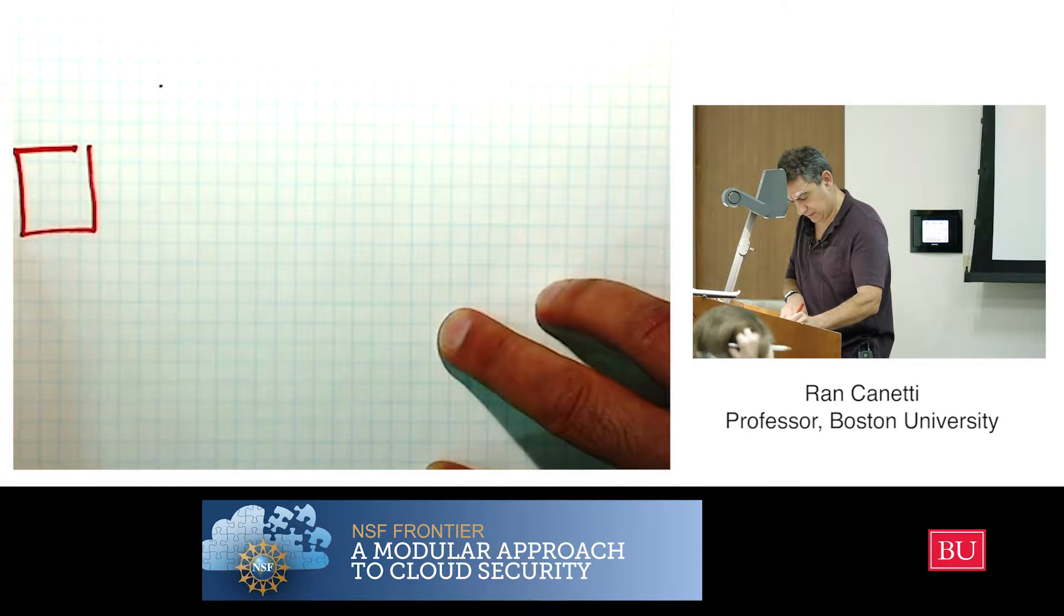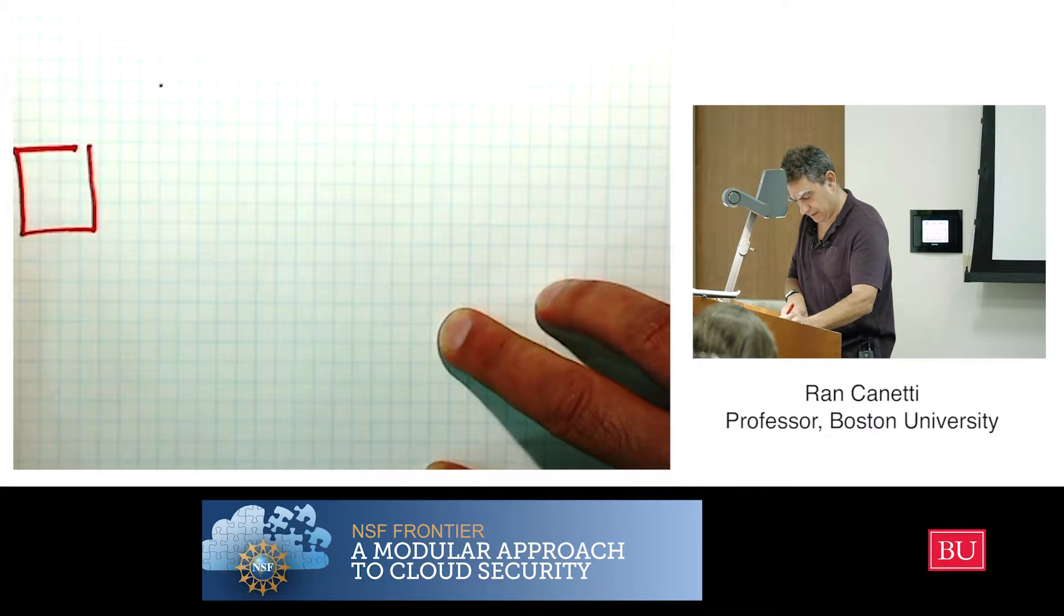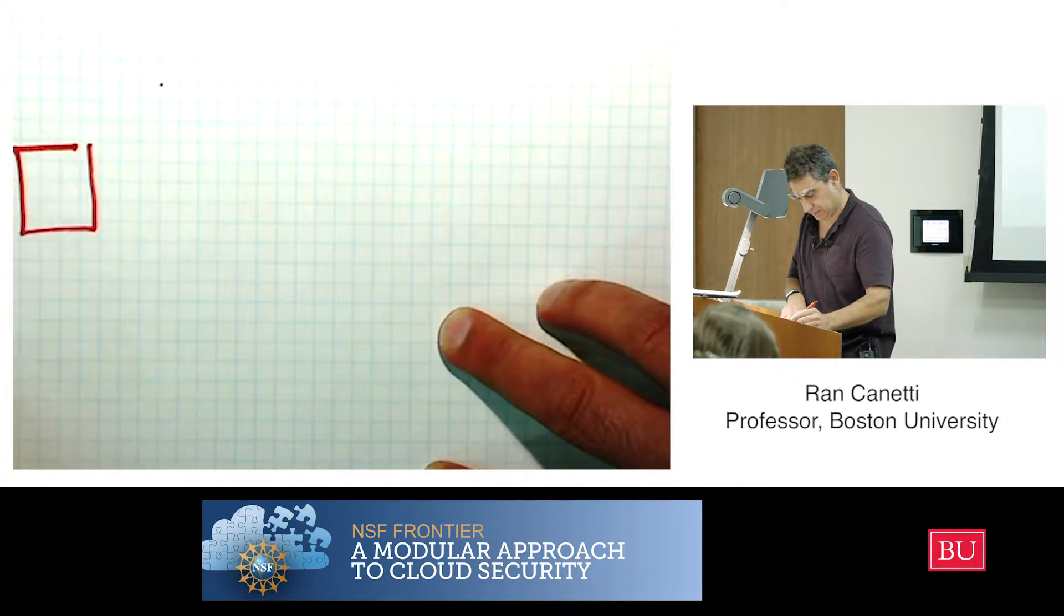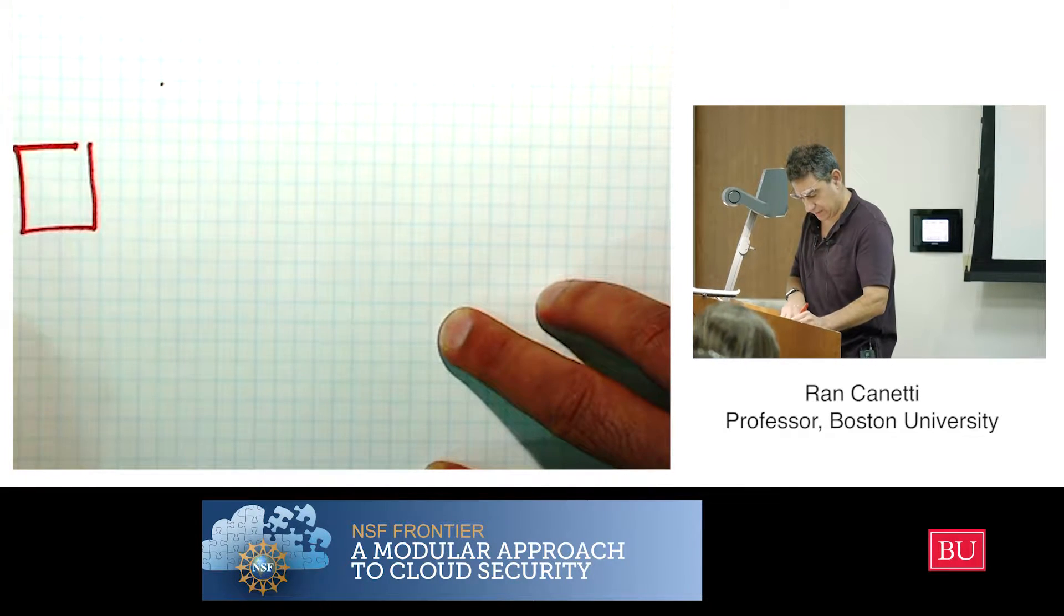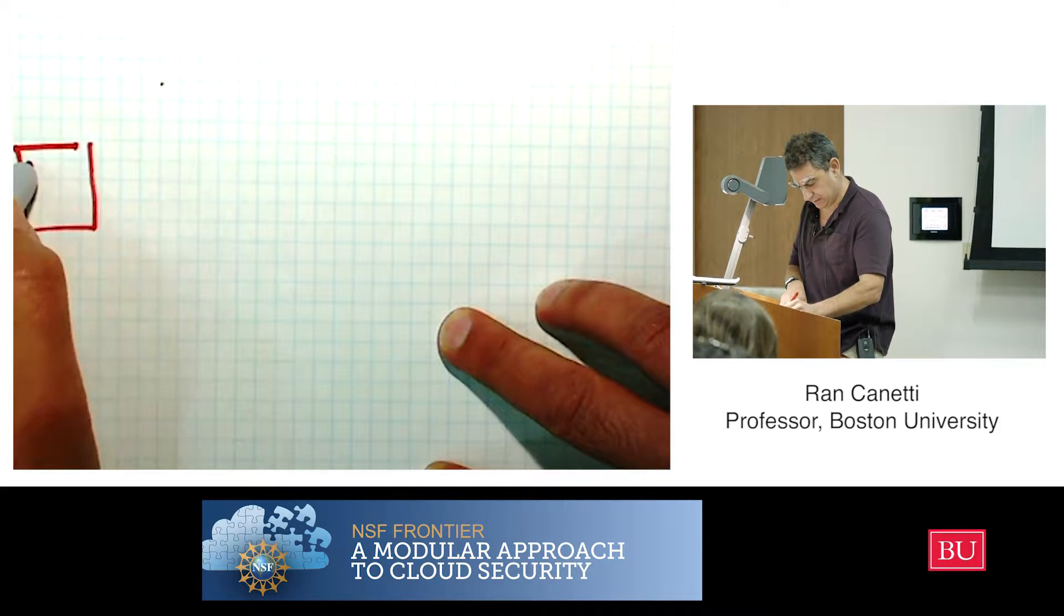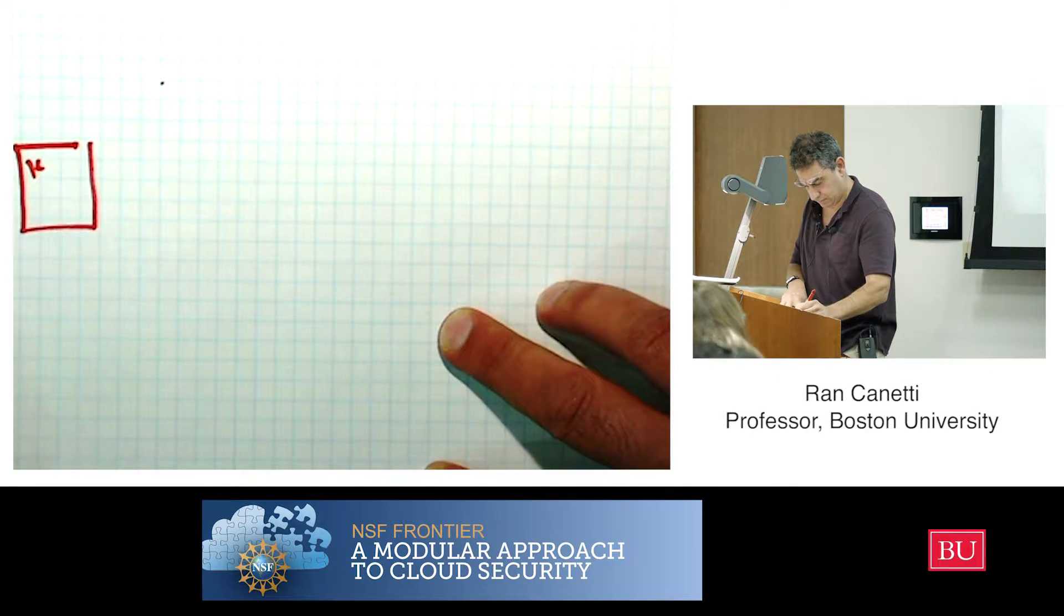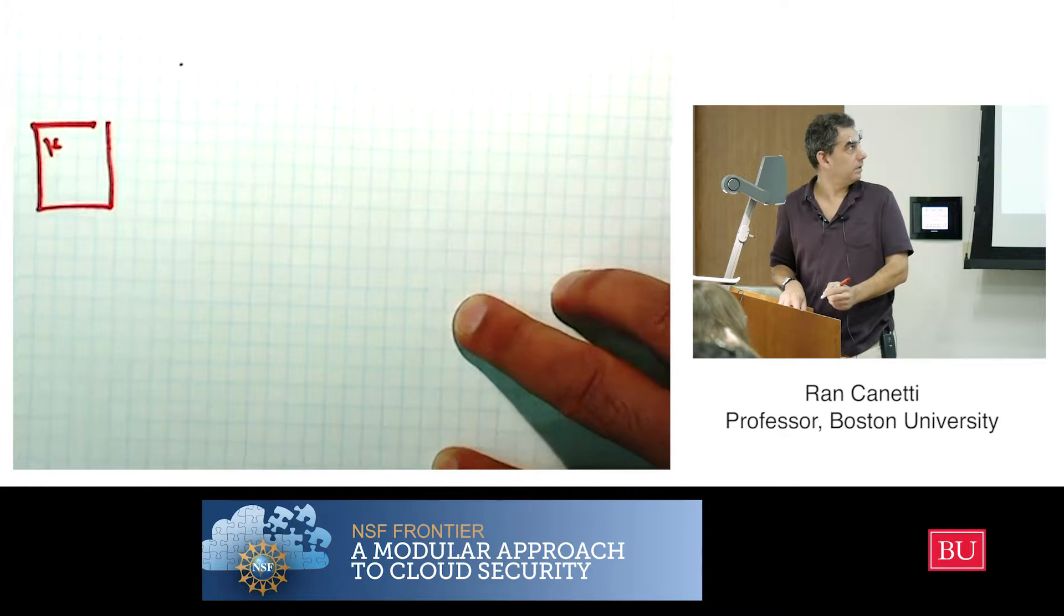So here is the protocol. This is A, and it gets, I'm A, I want to send the message M to B. And there's a key here and a key here. And this box outputs A, M, B.